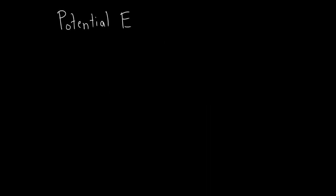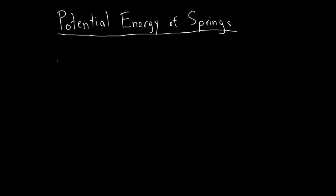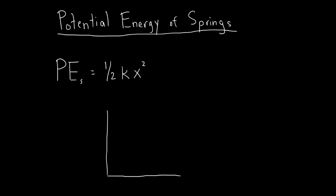Springs are commonly used to store potential energy. The equation for the potential energy of a spring is PEs equals one-half kx squared. If we made a graph of spring potential energy versus change in spring length, we would find an upward curve, which represents the direct squared relationship.